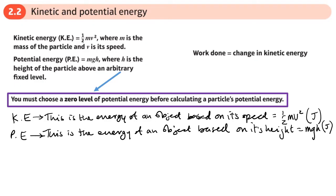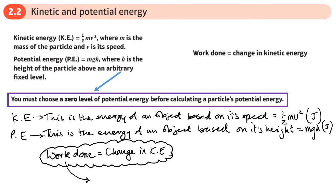Work done has a definition of force times distance. Another way of defining it is work done equals change in kinetic energy. If you slow something down or speed it up, work needs to be done to make that happen. If we can work out the change in kinetic energy, we can work out the work done to cause that change. Kinetic energy is force times distance.